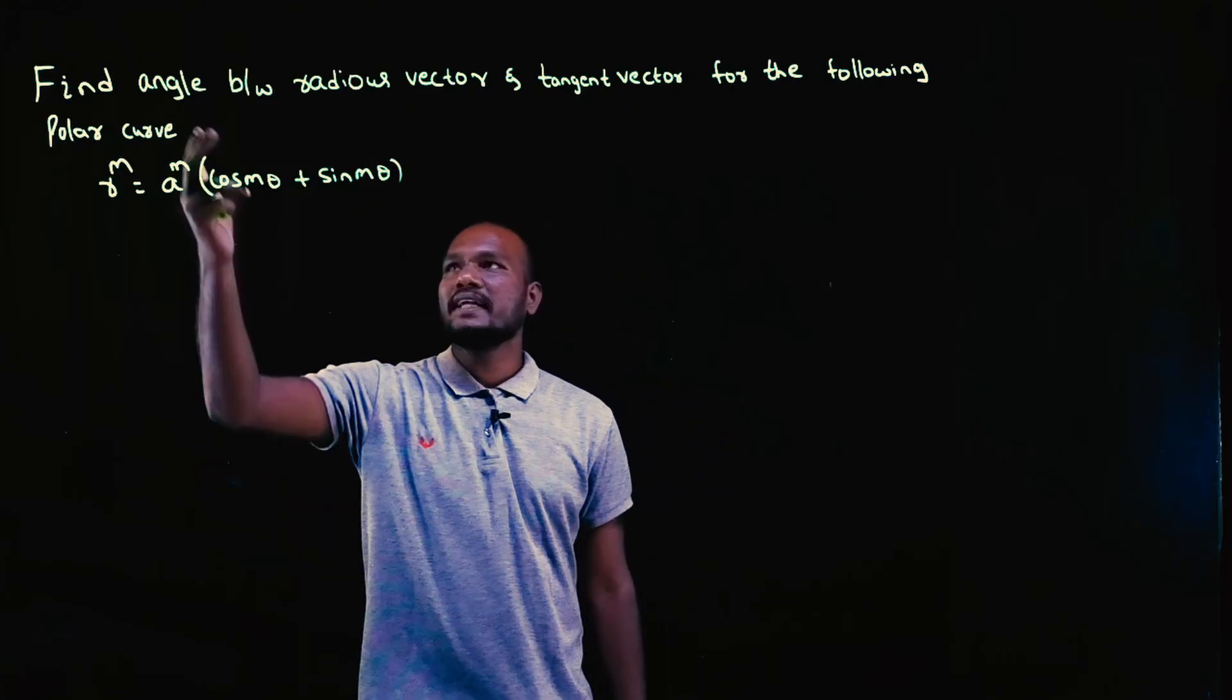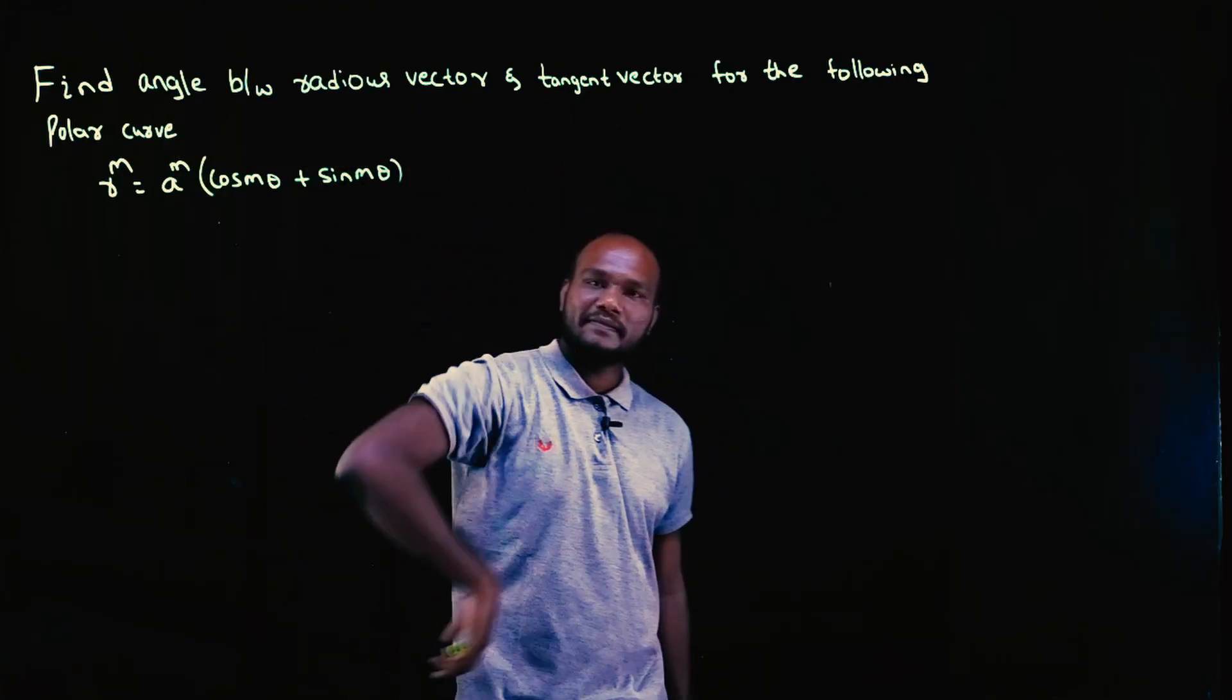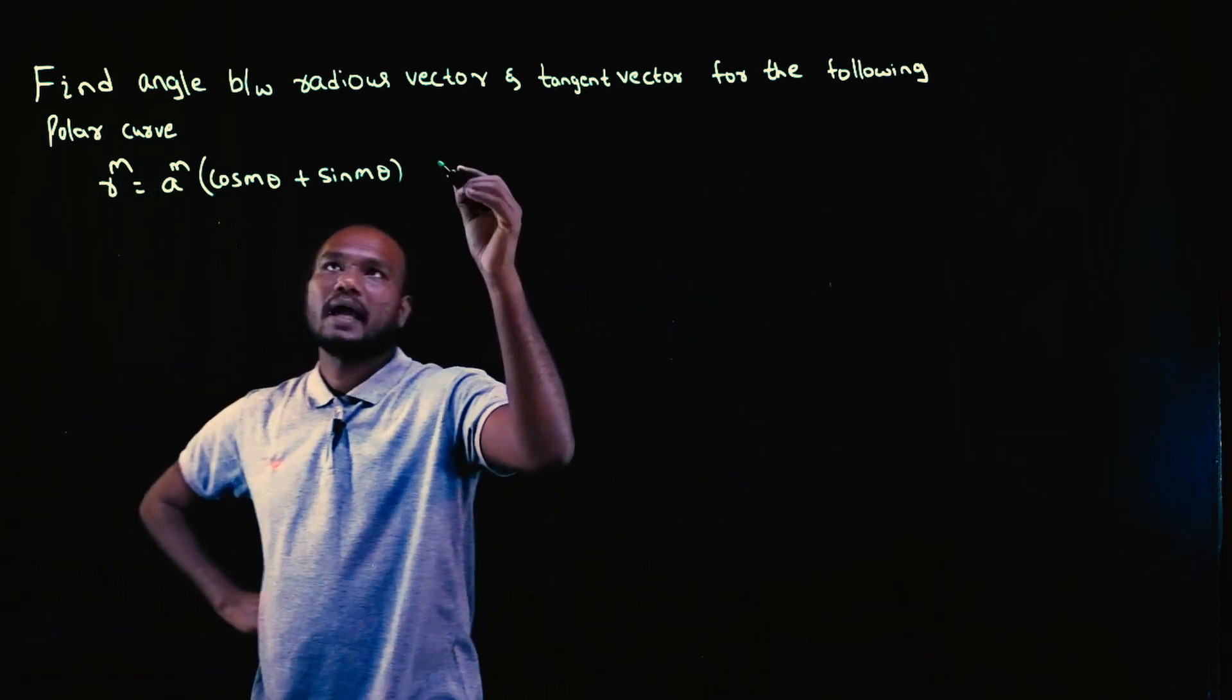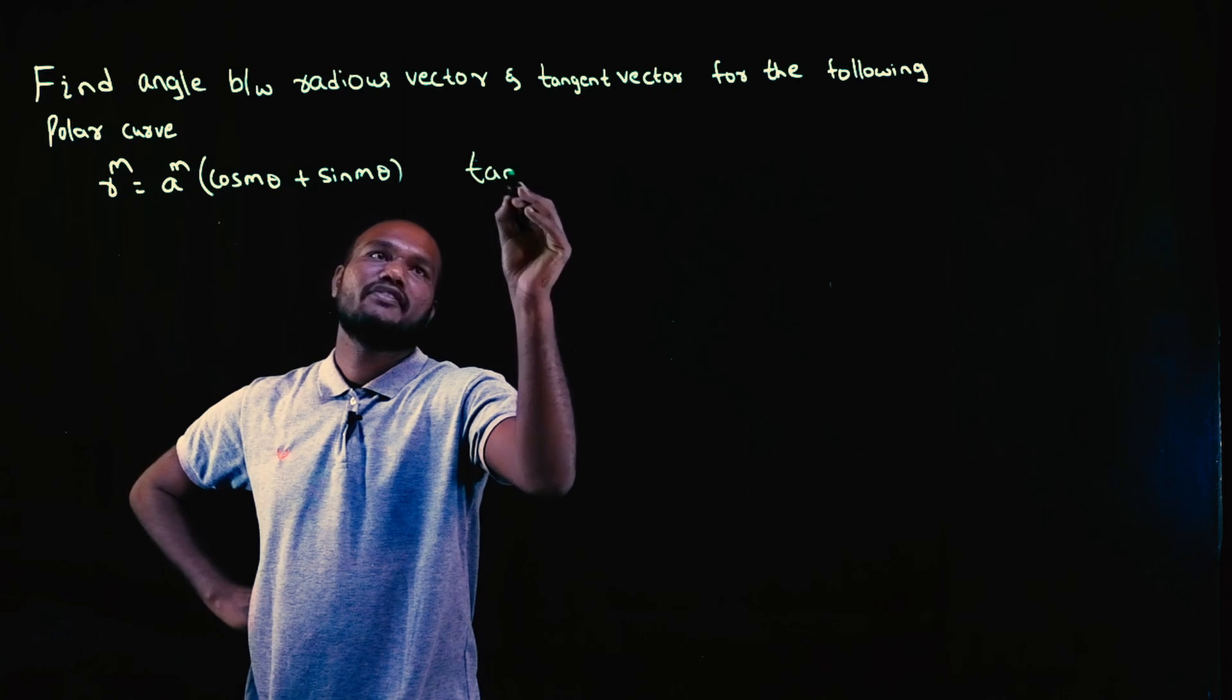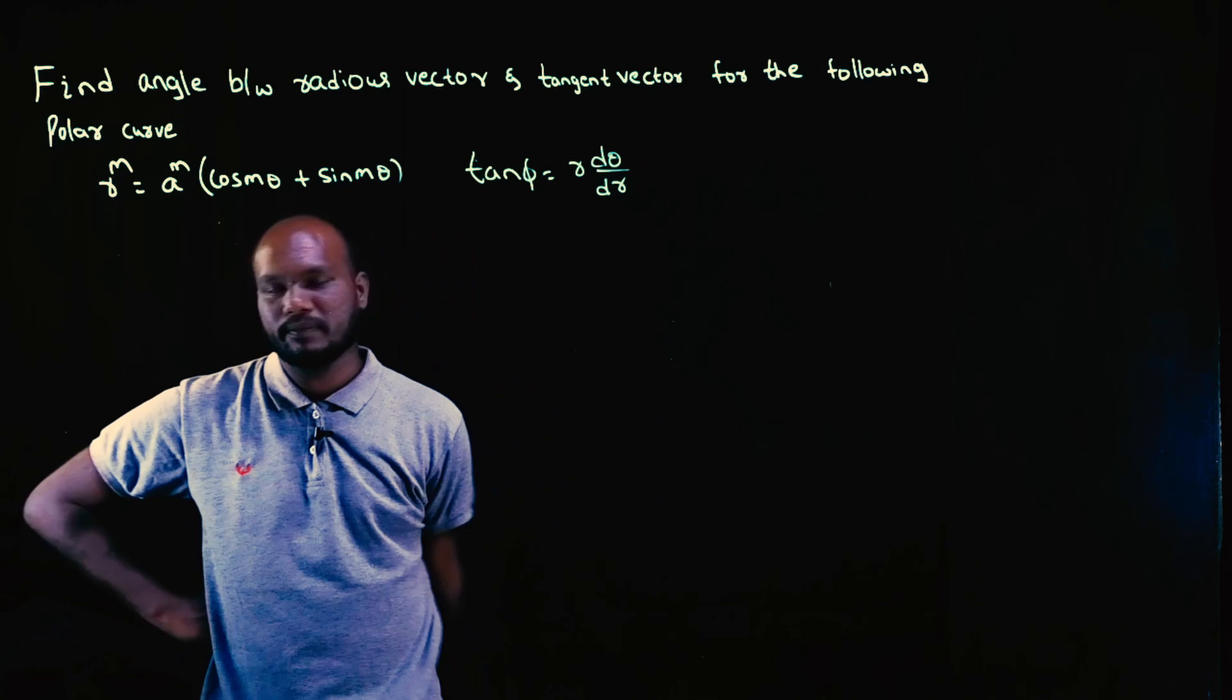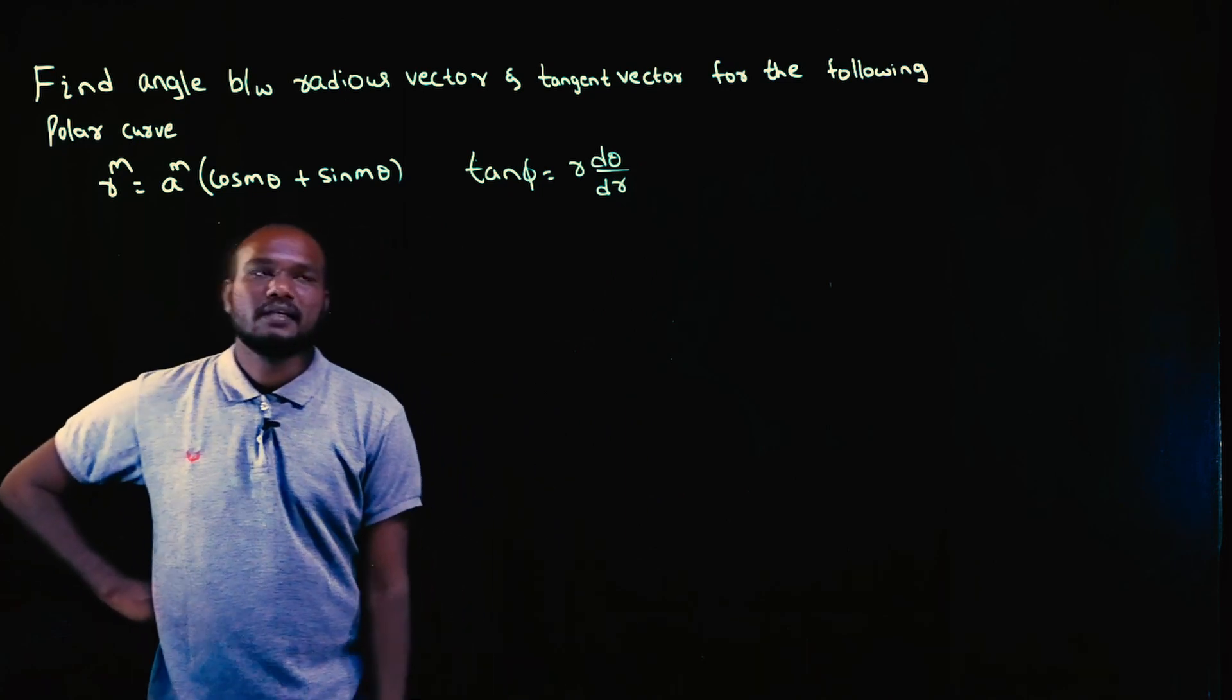The next question is to find the angle between radius vector and tangent vector for a given polar curve. The formula we already know is tan phi equals r times d theta upon dr.